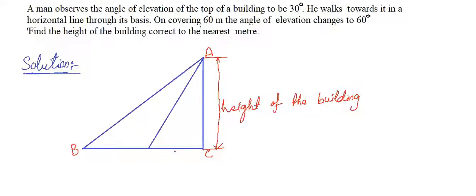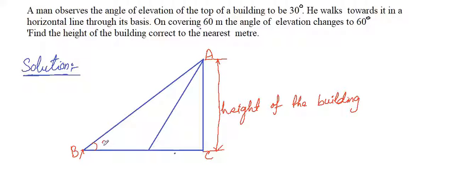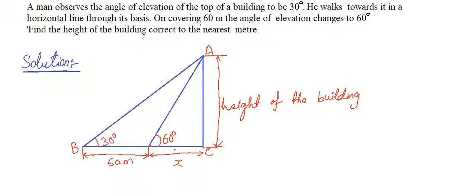And then that person moved 60 meters towards the building, so this length is 60 meters. And the person, where he is standing now, from that point to the building distance, let that distance be x. So at that angle will be 60 degrees, which is given in the question itself.